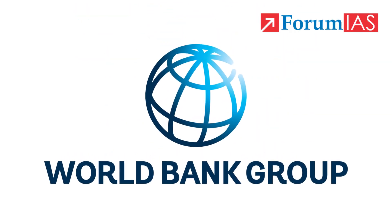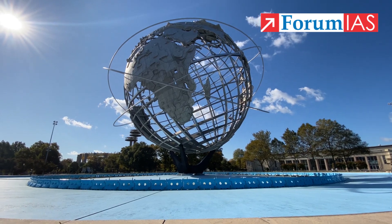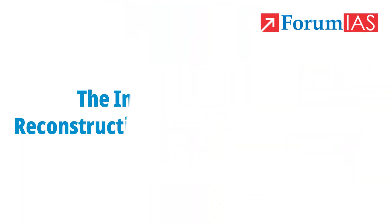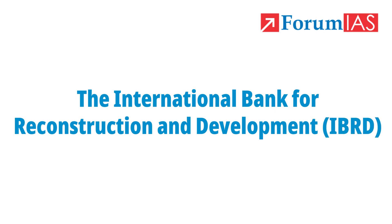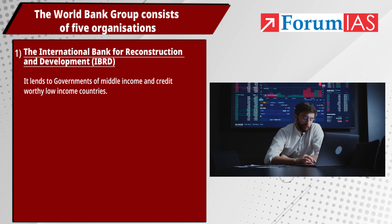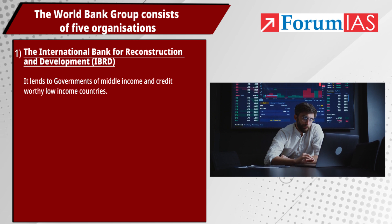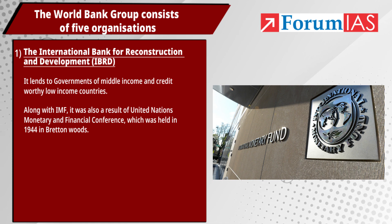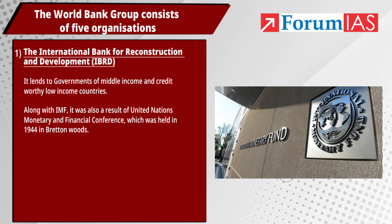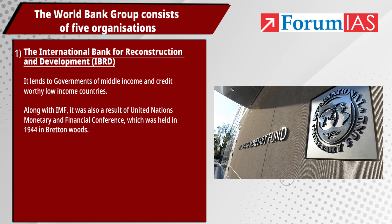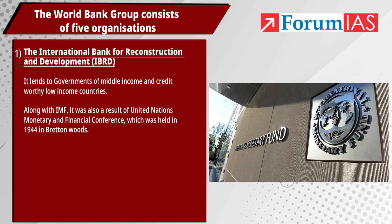The World Bank Group consists of 5 organizations. The first one is the International Bank for Reconstruction and Development (IBRD). It lends to governments of middle-income and creditworthy low-income countries. Along with IMF, it was also a result of the United Nations Monetary and Financial Conference, which was held in 1944 in Bretton Woods.